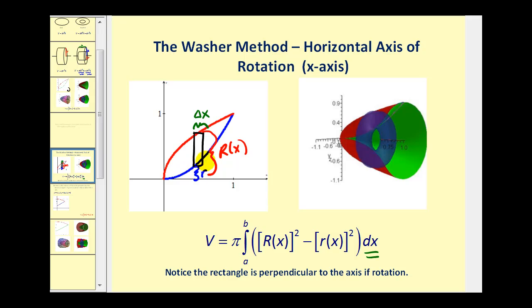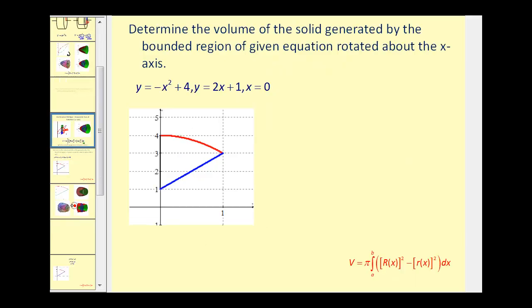We want to determine the volume of the solid generated by the bounded region of the given equations rotated about the x-axis. y equals negative x squared plus four is the red function, y equals two x plus one is the blue function, and x equals zero is the y-axis. We're taking this region and rotating it about the x-axis.